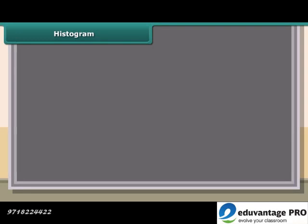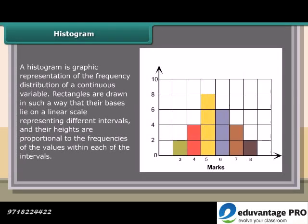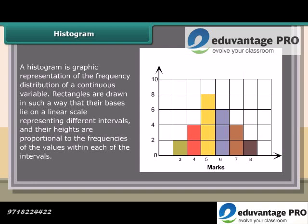Histogram: A histogram is graphic representation of the frequency distribution of a continuous variable. Rectangles are drawn in such a way that their bases lie on a linear scale representing different intervals and their heights are proportional to the frequency of the values within each of the intervals.